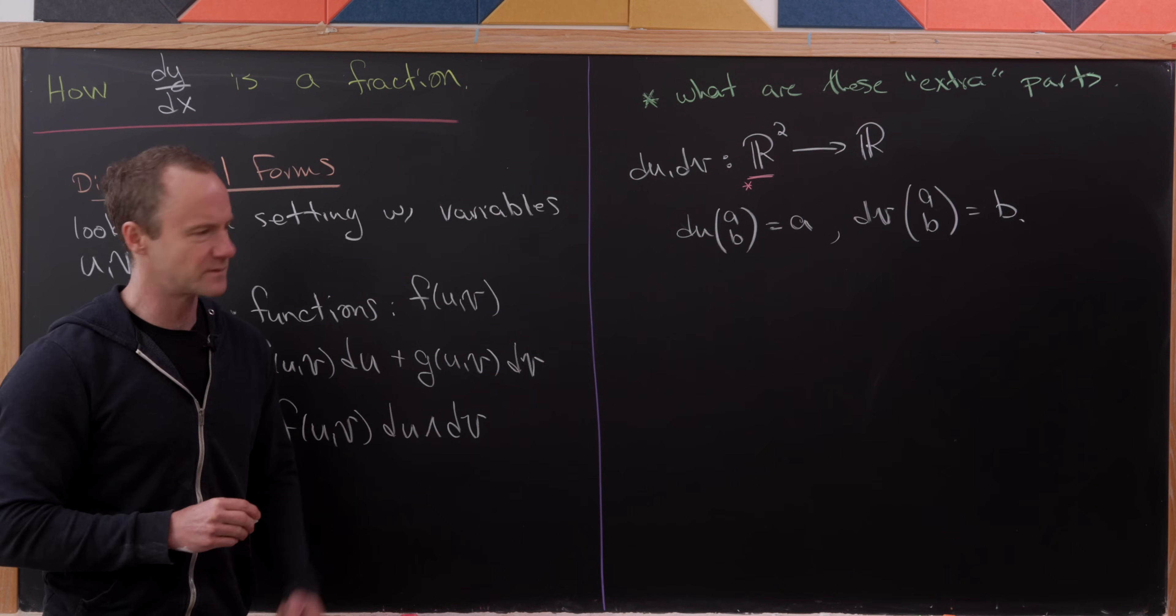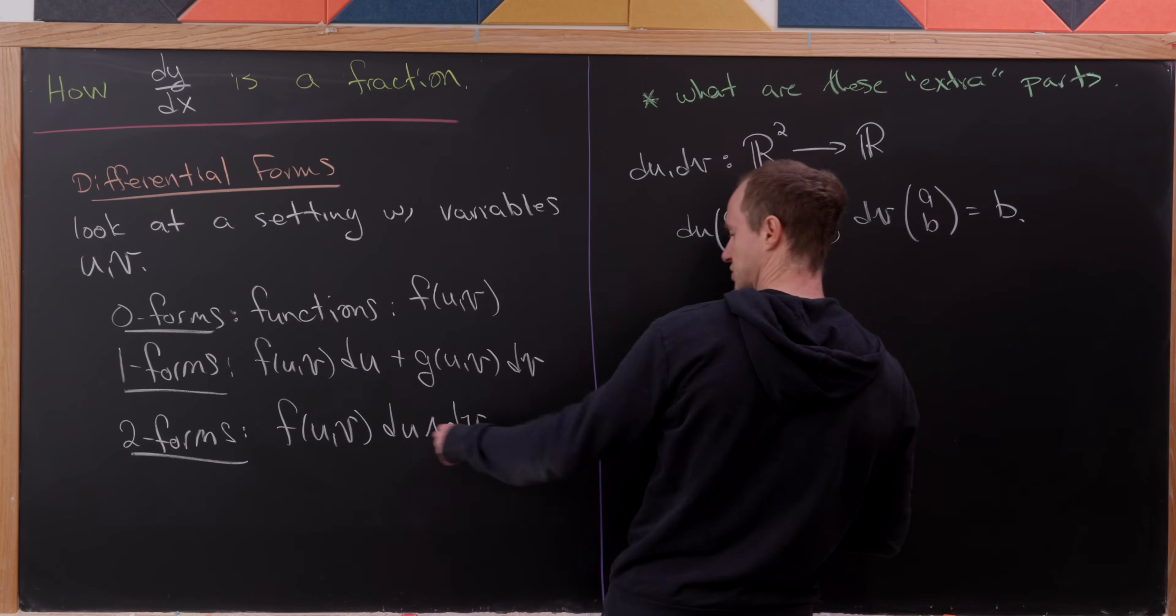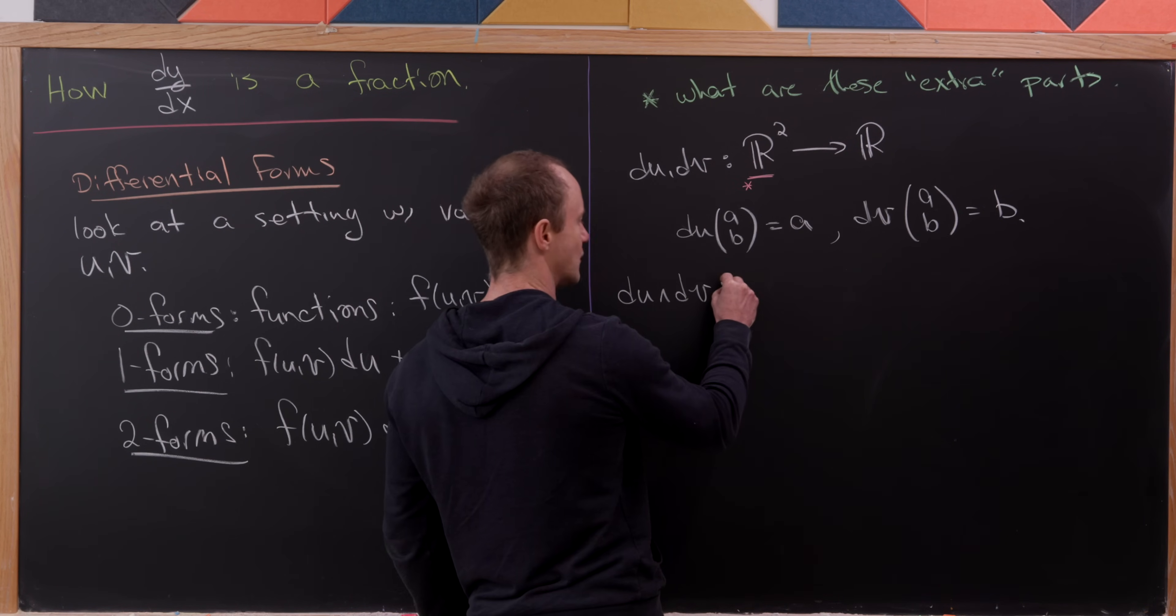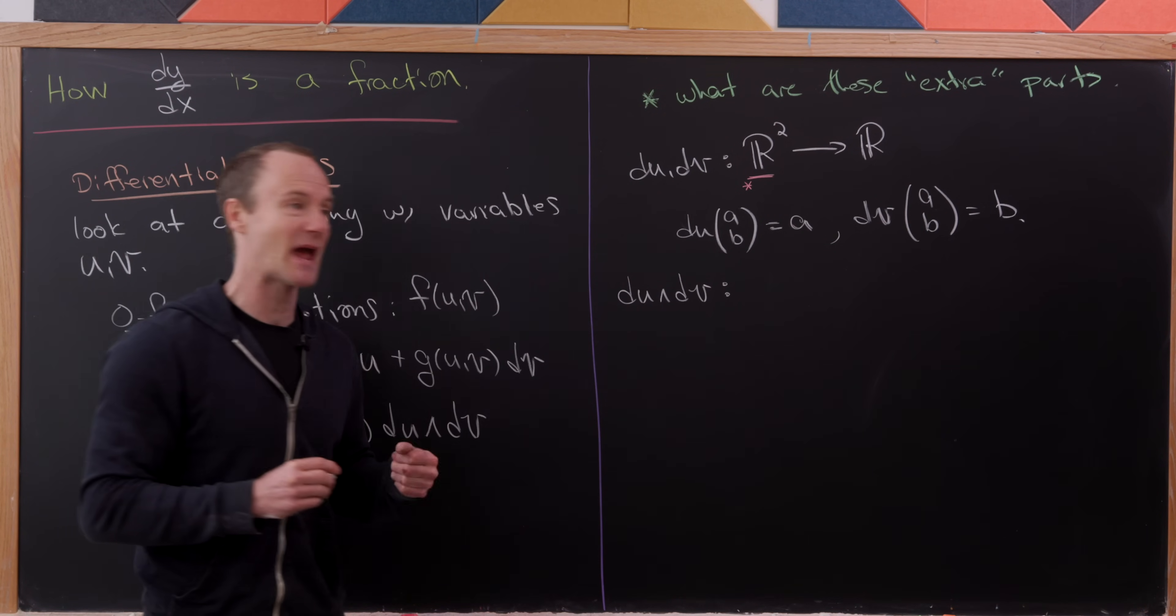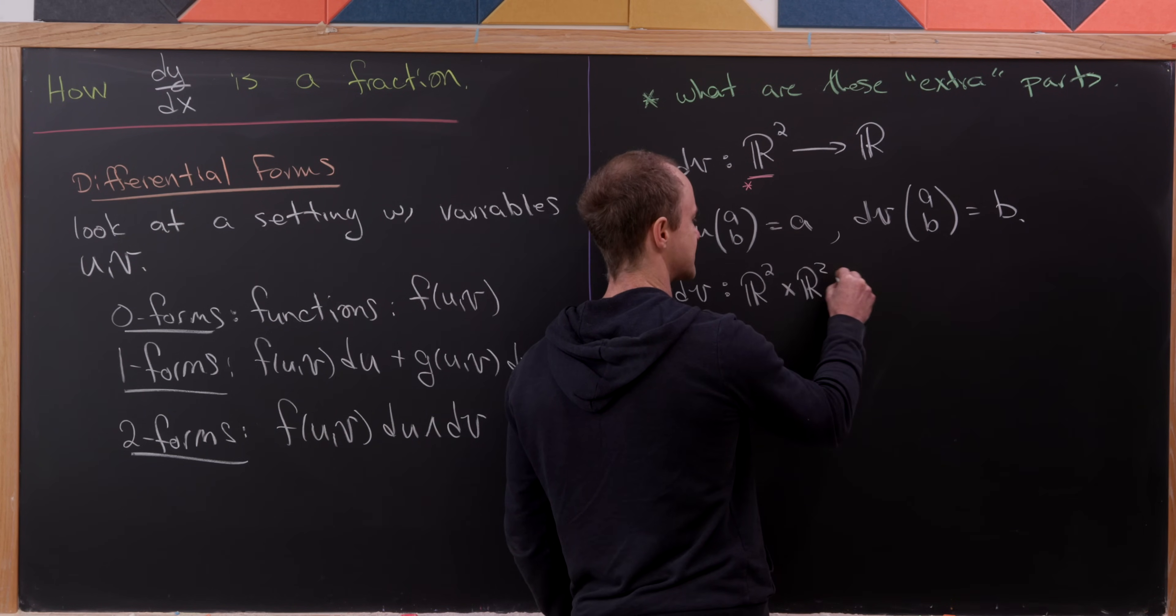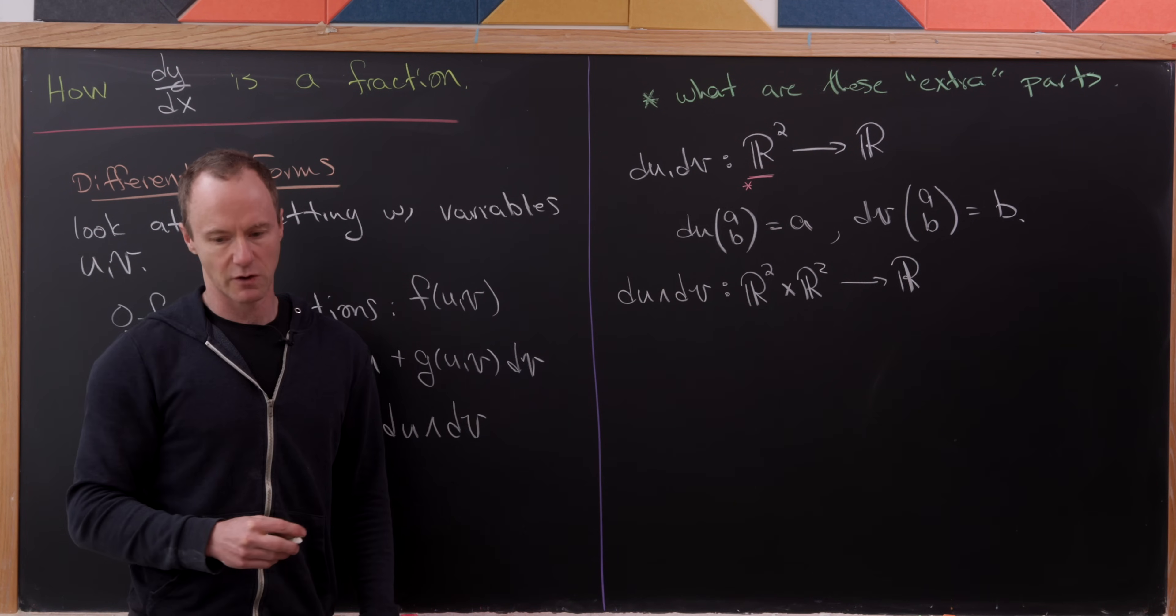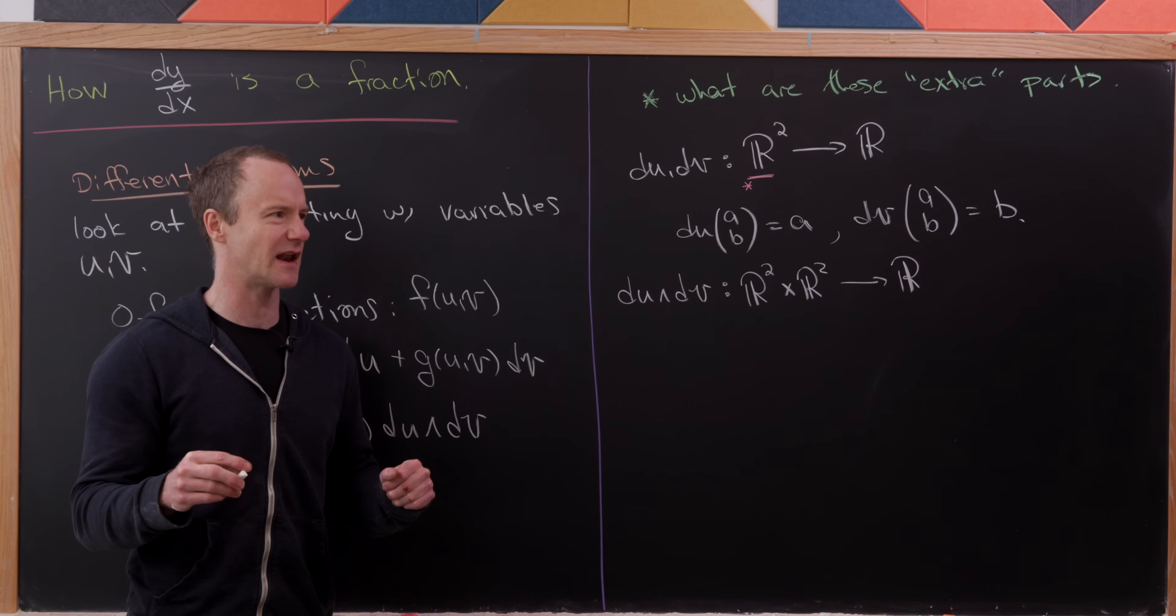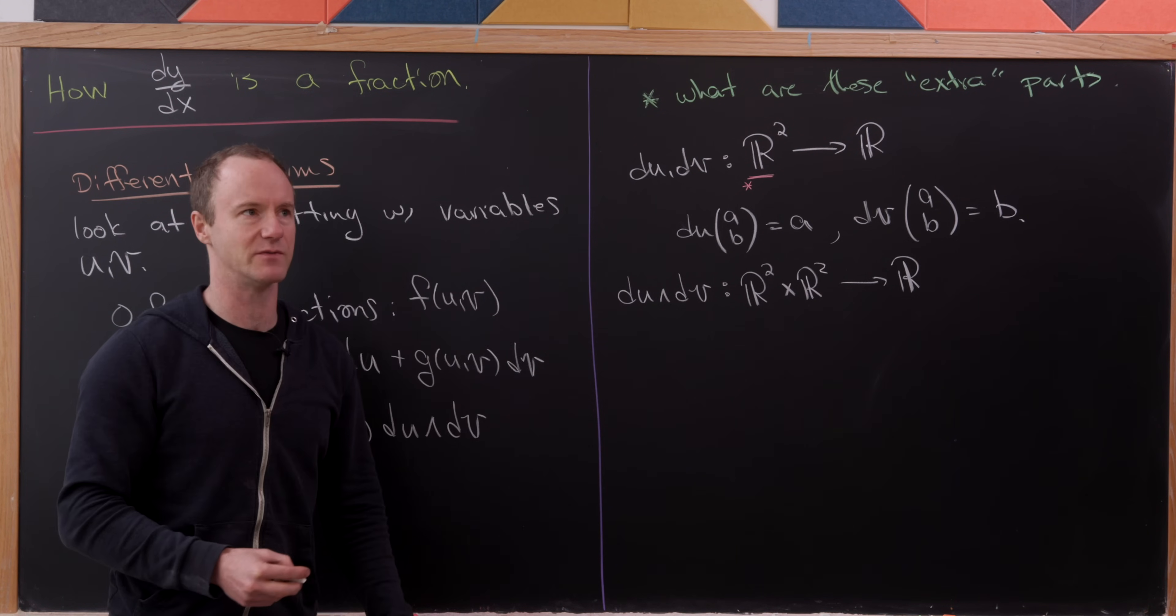Then what about the elementary two form, du wedge dv? If we look at du wedge dv, instead of taking a single vector, it takes a pair of vectors. So I'll say a pair of vectors looks like R2 cross R2, and then it gives you a number. Of course, you can say R2 cross R2 is like R4, so why don't we just have that? Well, we want to think about it as some sort of extension of what's going on up here. So it makes sense to have it be R2 cross R2.